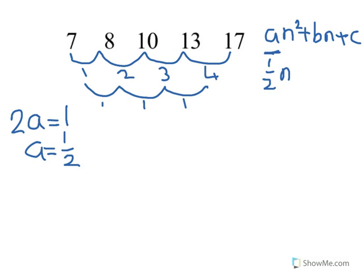So it's going to be half n squared plus Bn plus C. We're not going to find B next — we're going to find C.